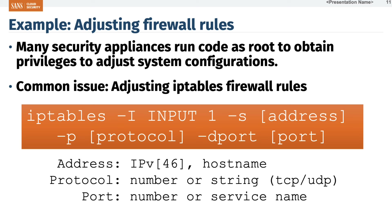That's easiest done as root, so that's why they do it. And then you may end up with more complex parameters — the address might also be a hostname; the protocol may accept not just a number but also strings like UDP, TCP, ICMP; and service names like HTTP or domain instead of port numbers 80 or 53. That makes things more complex when it comes to input validation.